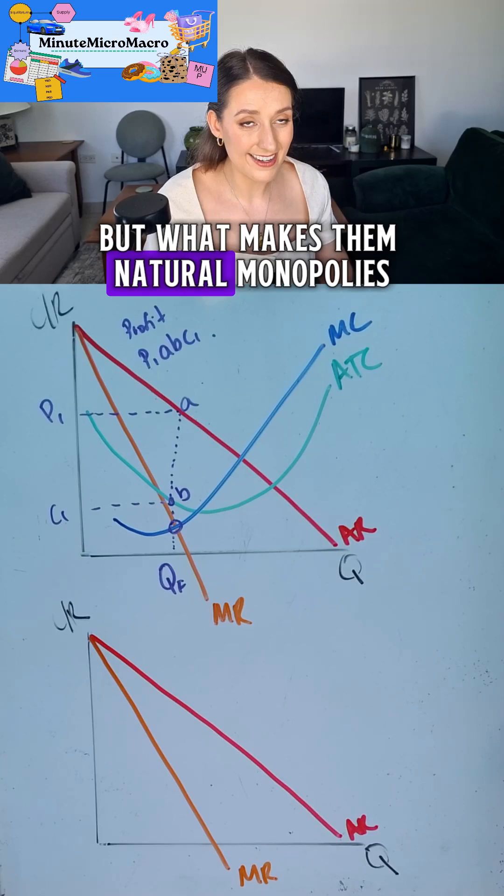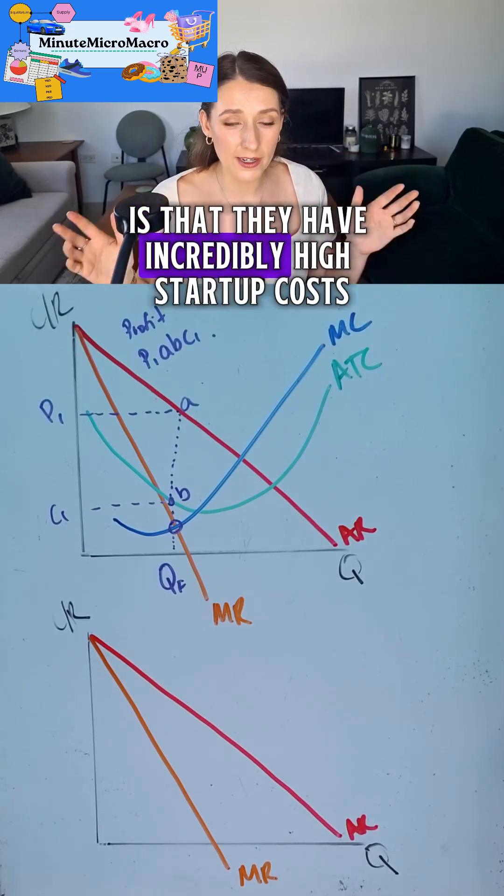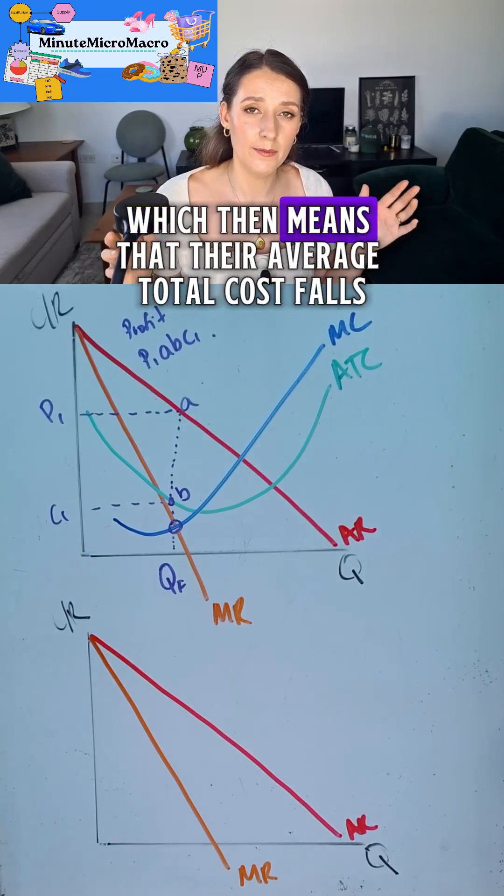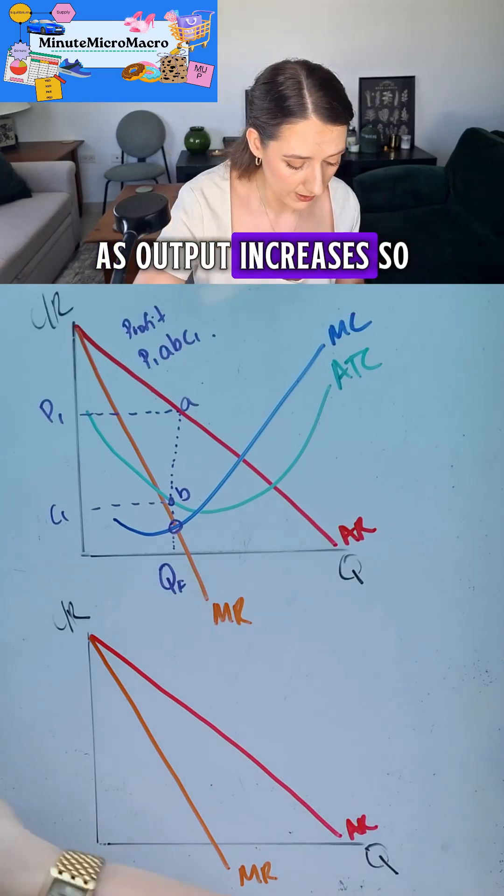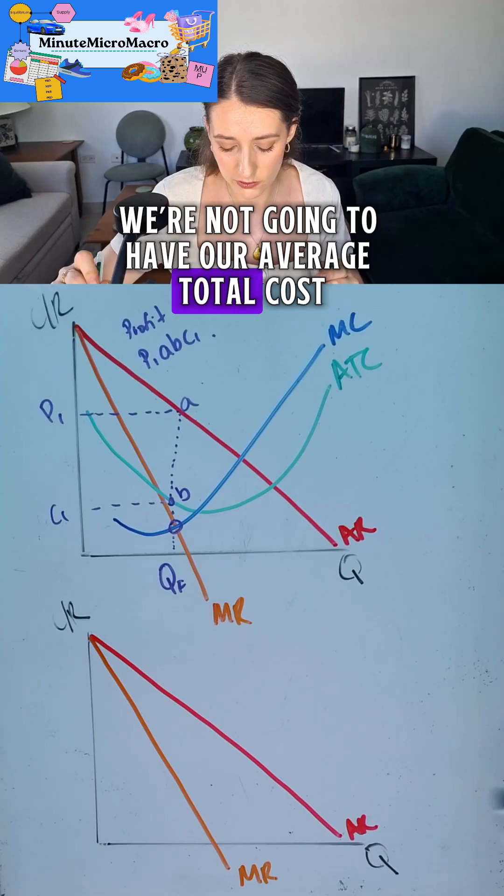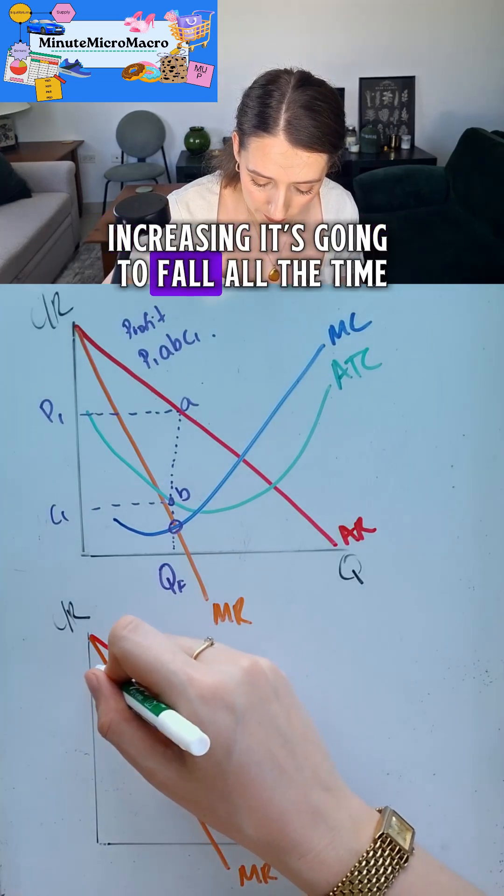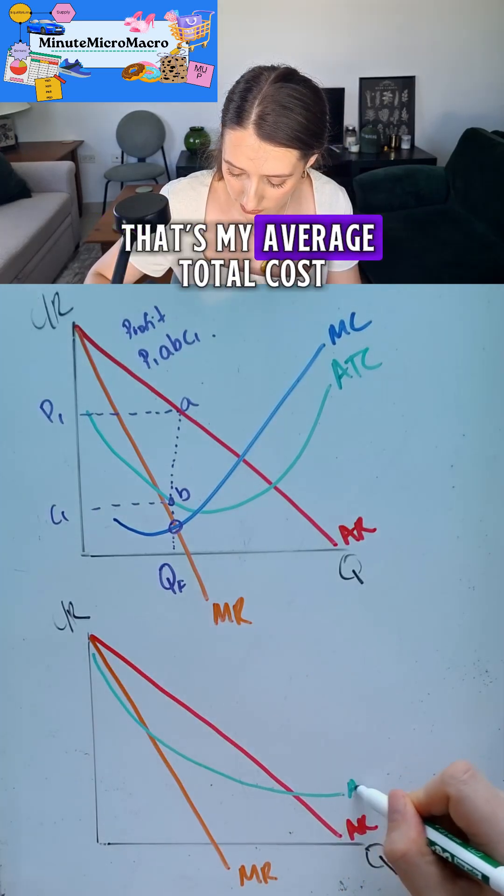But what makes them natural monopolies is that they have incredibly high startup costs, which then means that their average total cost falls as output increases. So we're not going to have our average total cost increasing. It's going to fall all the time. That's my average total cost.